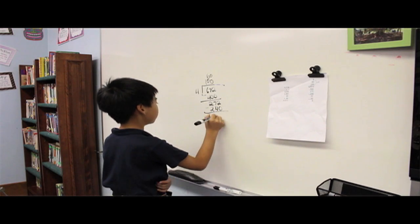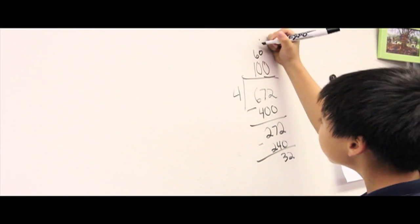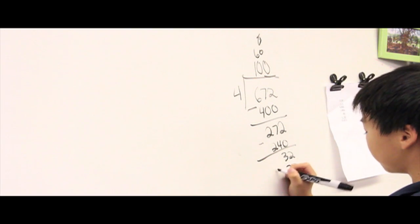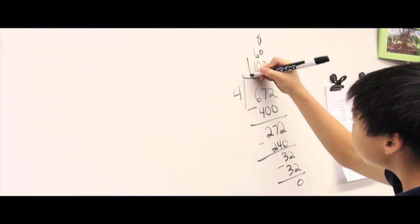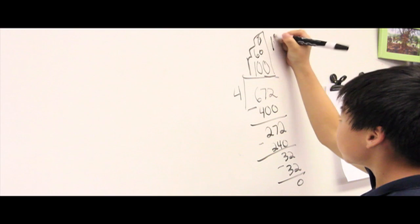272 subtract 240 is 32. 4 can go into 32 8 times. 4 times 8 is 32. 32 subtract 32 is 0. That means you have a remainder of 0. If you add up all the quotients you will get 168.